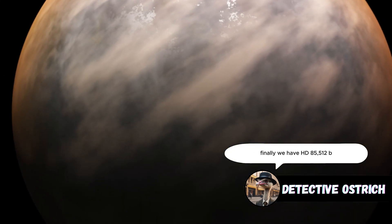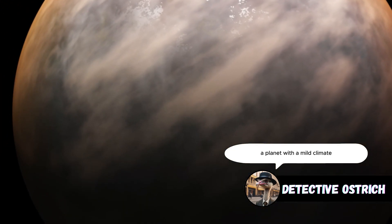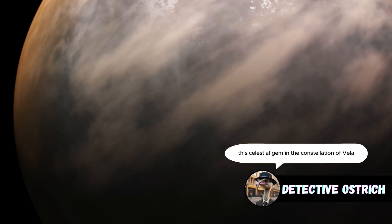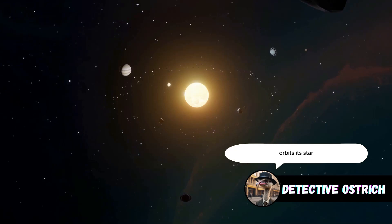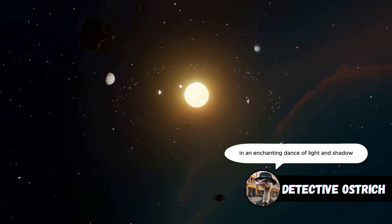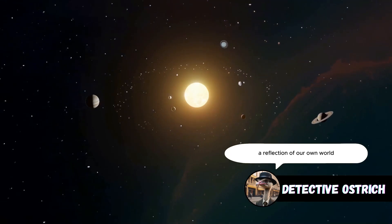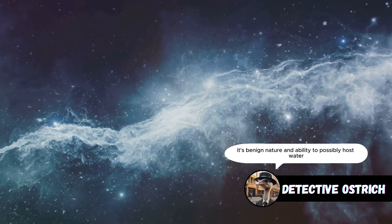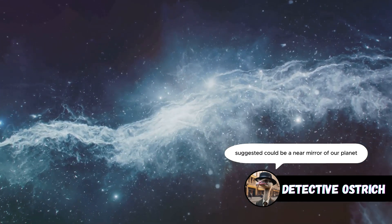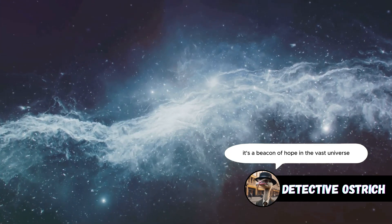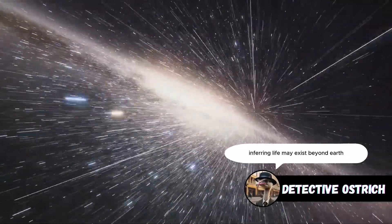Finally, we have HD 85512b, a planet with a mild climate and potential for liquid water. This celestial gem in the constellation of Vela orbits its star in an enchanting dance of light and shadow. We marvel at its potential for life, a reflection of our own world. Its benign nature and ability to possibly host water suggest it could be a near mirror of our planet.